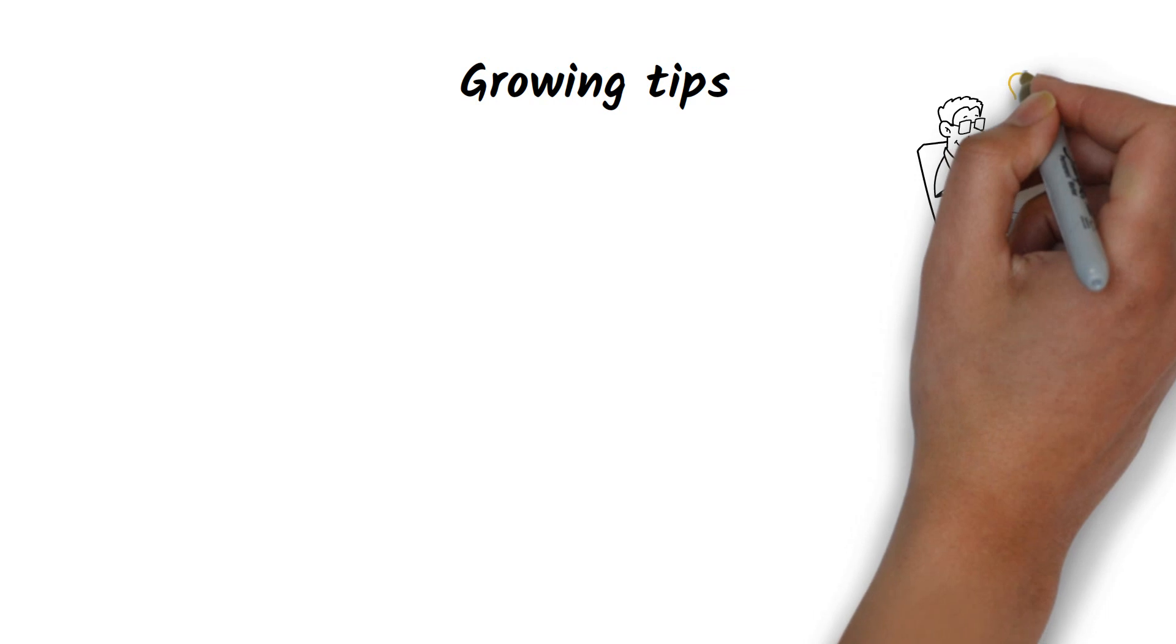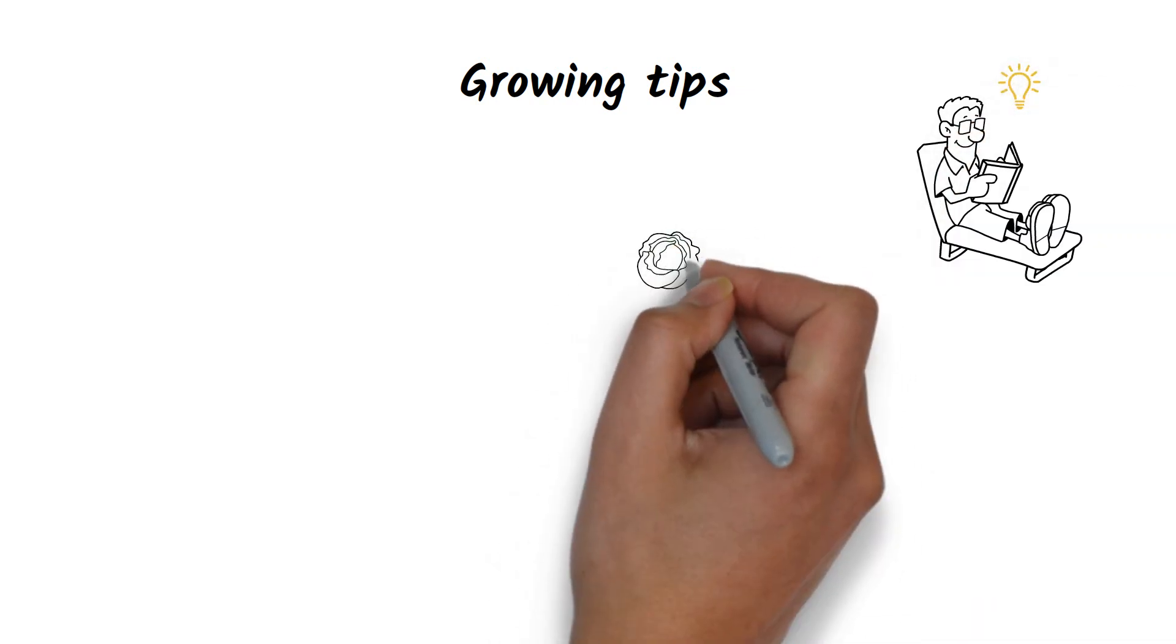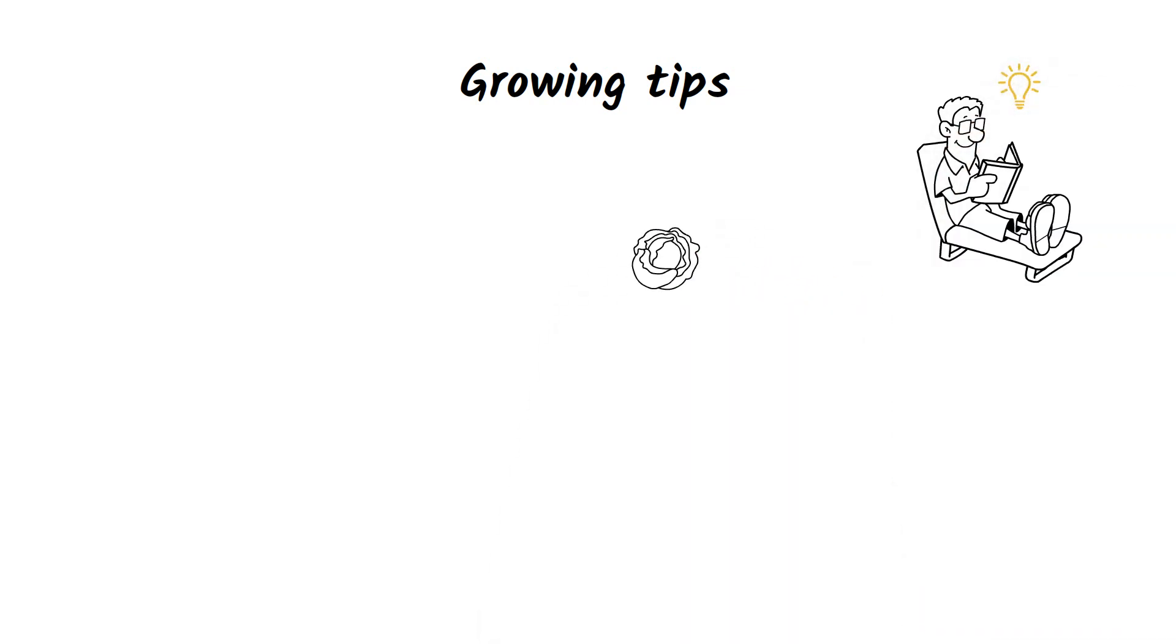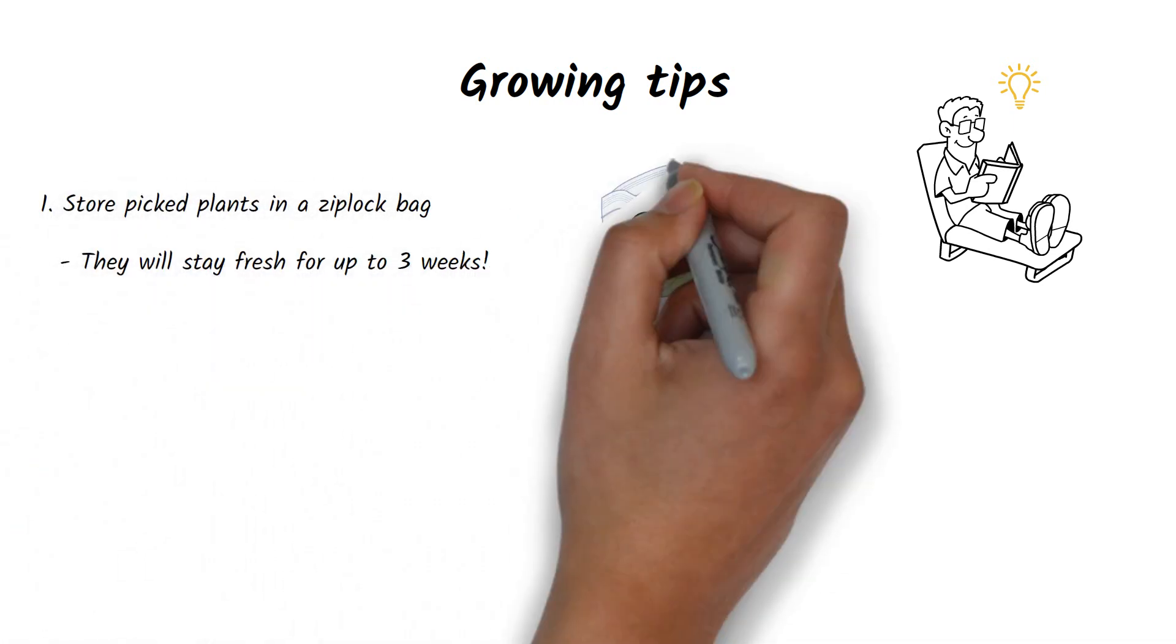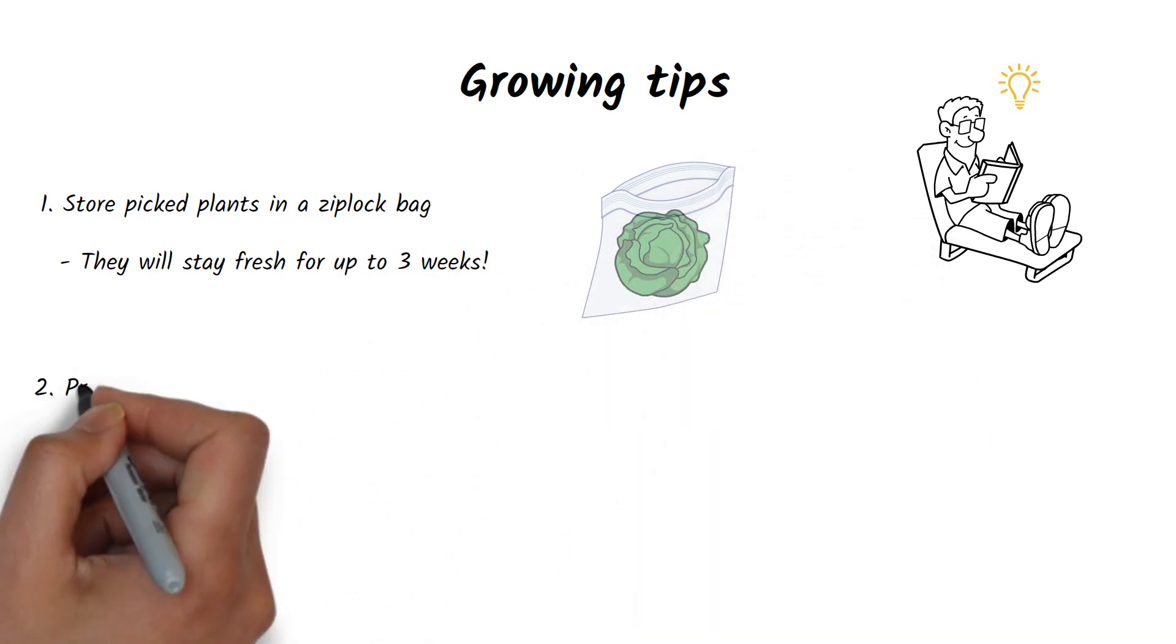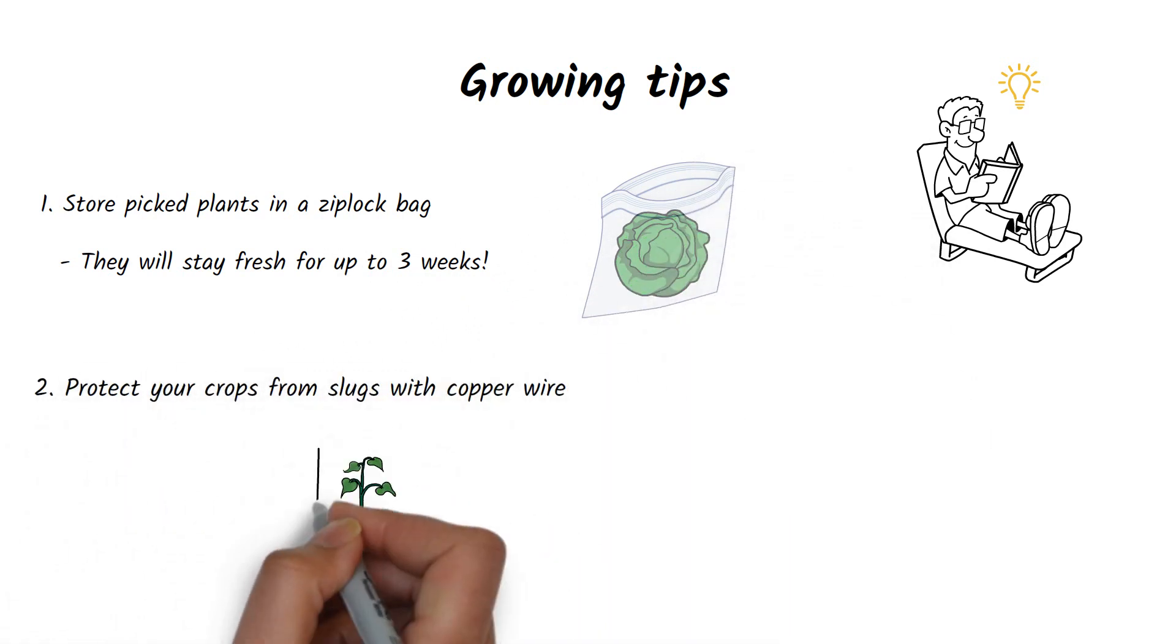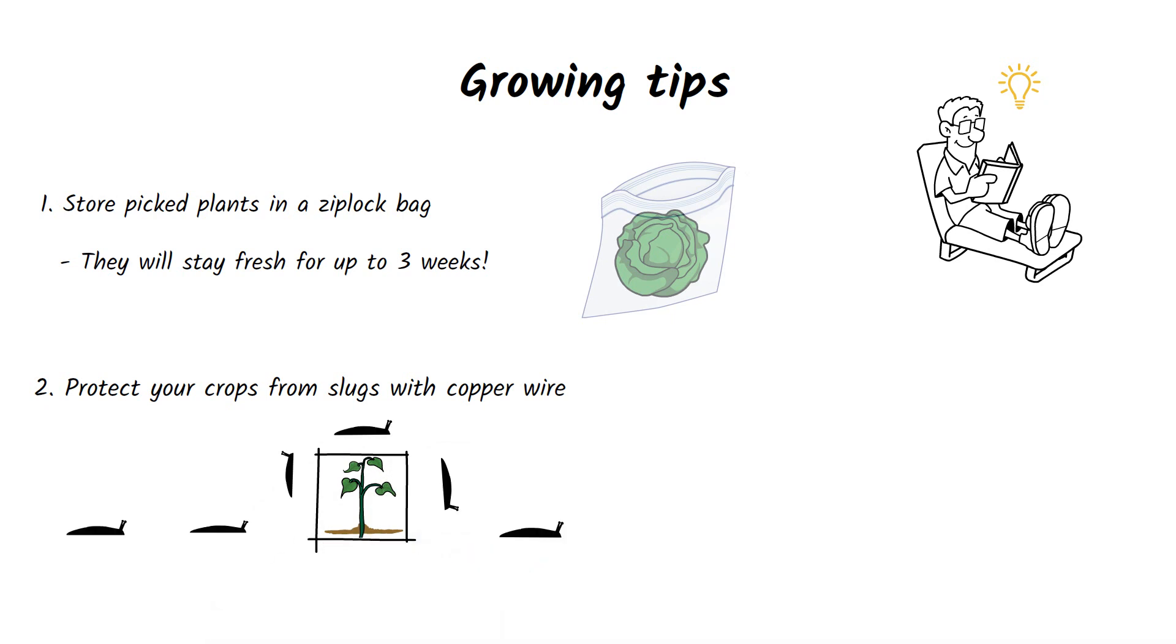Finally, a few more growing tips. Plants grow faster in a hydroponic system. For example, lettuce can be grown hydroponically in as little as 21 days. Once picked, store it in a ziploc bag. It will stay fresh for up to three weeks. If you are fighting slugs in your outdoor beds, try stretching copper wire around them.